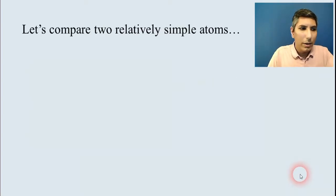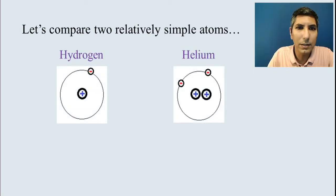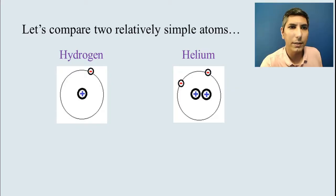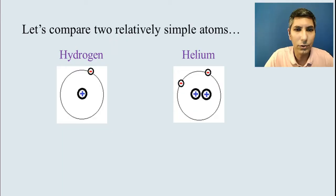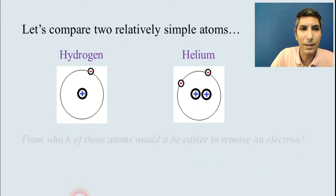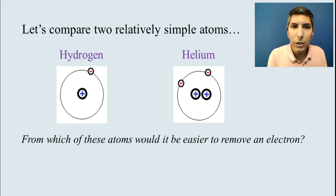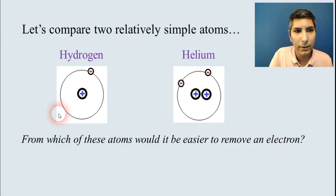Now, let's take a look at two relatively simple atoms. In fact, these are, for all practical purposes, the two simplest atoms that exist. Hydrogen and helium. And you can see these, of course, these are not drawn to scale. This is just a little cartoon that I made to help us visualize these. Now, imagine or ask yourself, from which of these atoms would it be easier to remove an electron? So, think about that. And the answer is, it is easier to remove an electron from hydrogen.